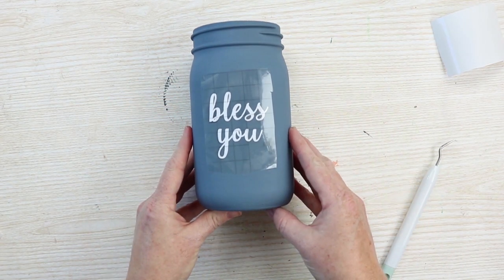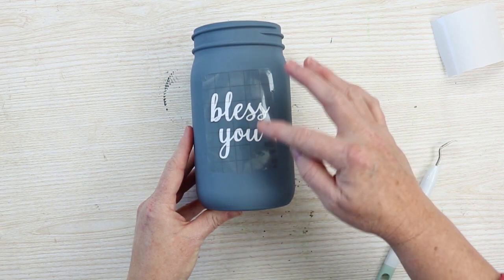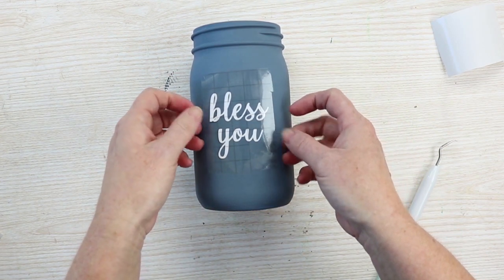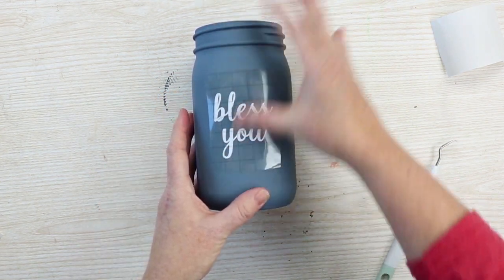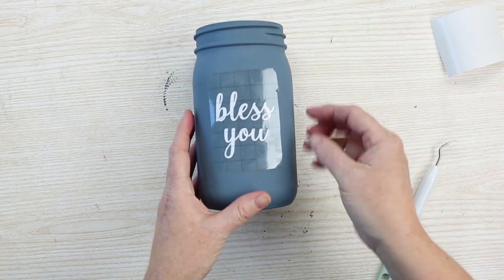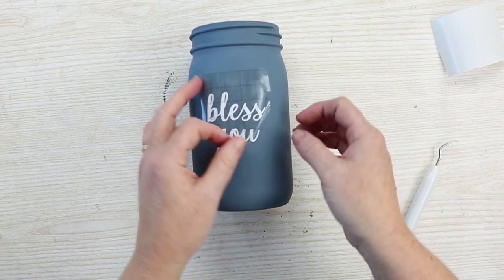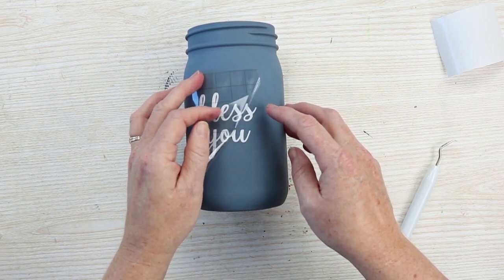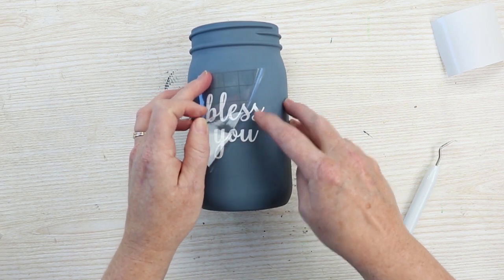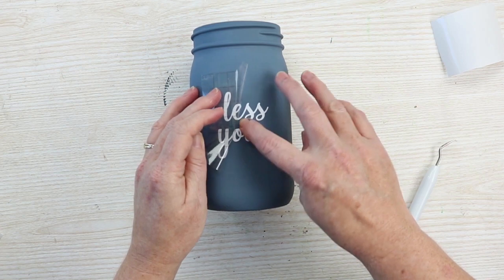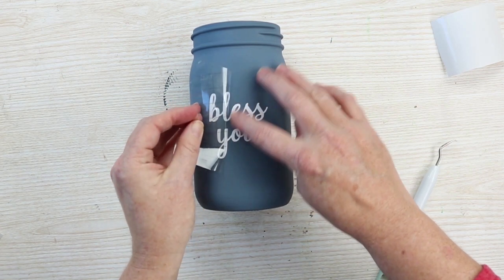Now after that we are going to add our tissues. We're going to use some upright tissues. I ordered these off Amazon and they fit in the jar perfectly. It's what I would recommend for this project. You could definitely try a box of tissues, but you may have trouble actually getting them in the jar and getting them to come out of the jar nicely.